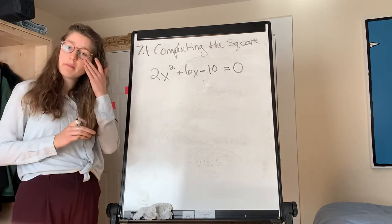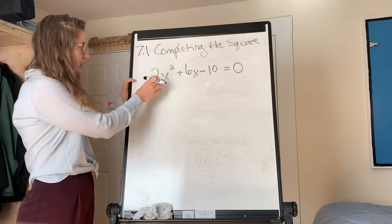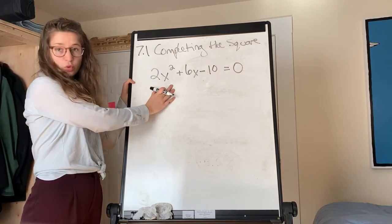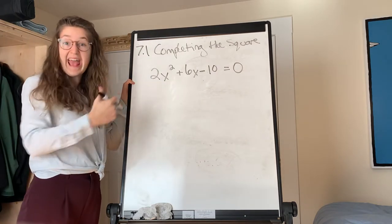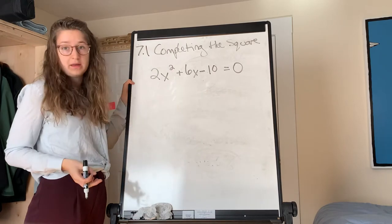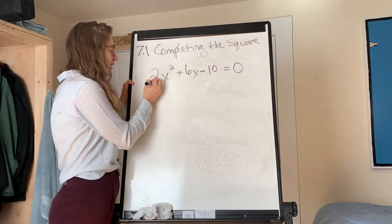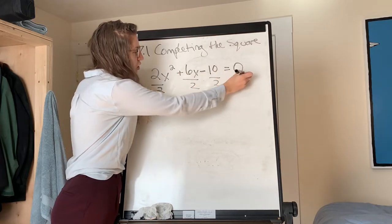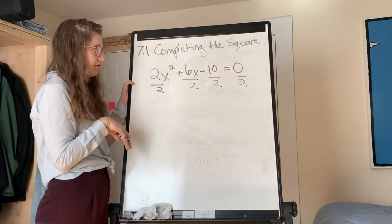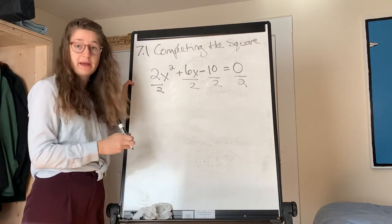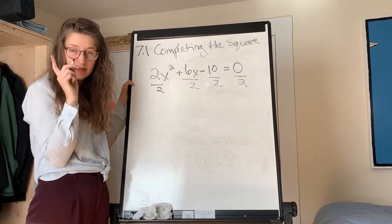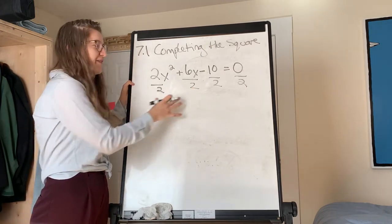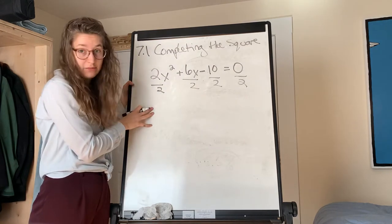The first thing you need to remember when you're completing the square is that the coefficient on the x squared term, in other words the a, needs to be 1. So in this case it's 2, so we're going to start by dividing every term by 2. Make sure that you're dividing the 0 by 2. You're obviously going to get 0, but don't forget that you can't just divide one side by 2 and not the other side.